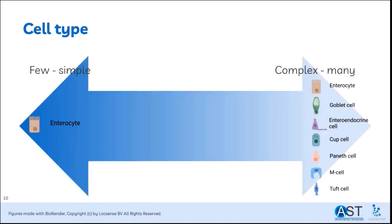For an in-vitro model, it is vital to find the balance between, on the one side, easy, reproducible, and understandable, and on the other side, complex and in-vivo-like but more difficult to reproduce and understand. With fewer cells, the mimic is easier to reproduce and understand, while with more cells, the mimic is more in-vivo-like but also more difficult to work with and maybe overcomplicated.